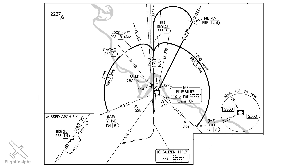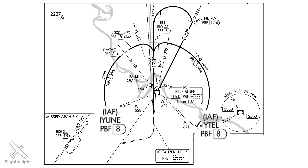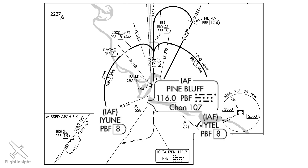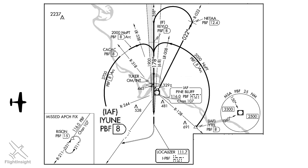First, we'll want to identify where we're starting this approach from. There's no radar required, so we might not get radar vectors onto final. So let's look at the various points we'd start the approach from — these would be the initial approach fixes, and there are three of them: IUNE and ITEL on the west and east side of the field, and the Pine Bluff VOR, which sits a few miles north of the field. Let's assume we're approaching from the west and use IUNE as our initial, as that's the most convenient. This will be assigned by ATC, but they may allow us to request which fix to start from. Radar isn't required on this approach, but DME is, and it's going to be crucial to identify certain points along the approach.